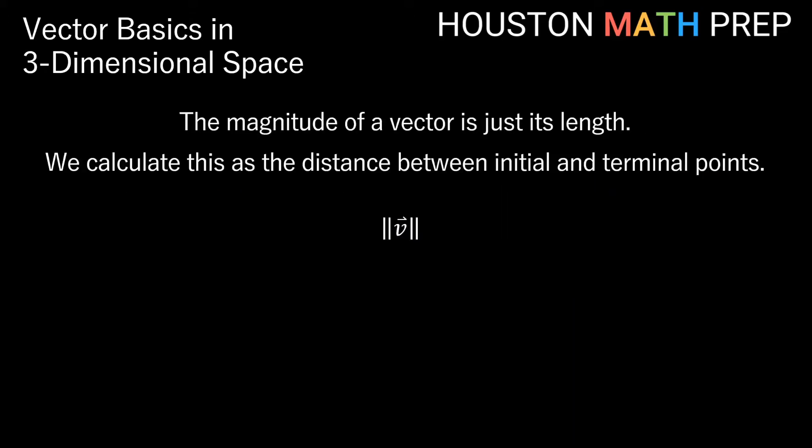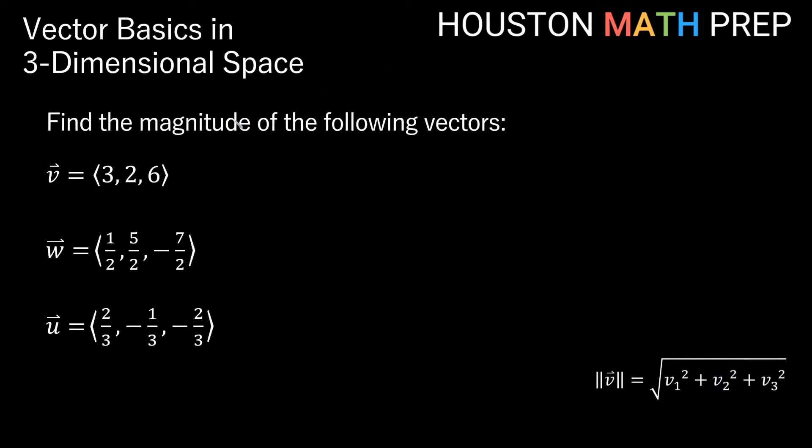One thing besides direction that's important about a vector is how long the vector is. The word we use to describe the length of a vector is the magnitude. We use these brackets here to denote the magnitude of a vector. They look like double absolute value brackets. So this here is saying the magnitude of vector v. And finding the magnitude of a vector is very similar to how we find distance, since the magnitude of a vector is really just the distance between its endpoints. So for magnitude, we'll simply square each component of the vector, we'll add all of those up, and then we'll take the square root, much like we do in the distance formula in 3D space.